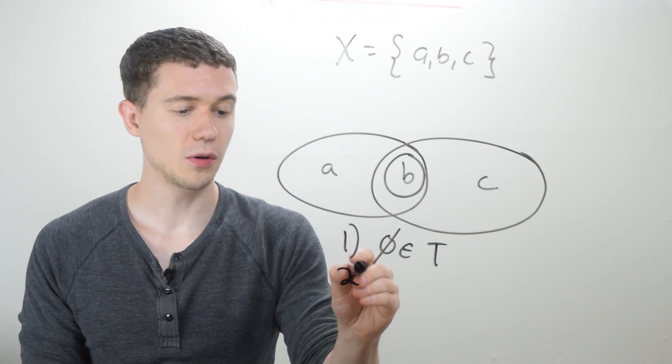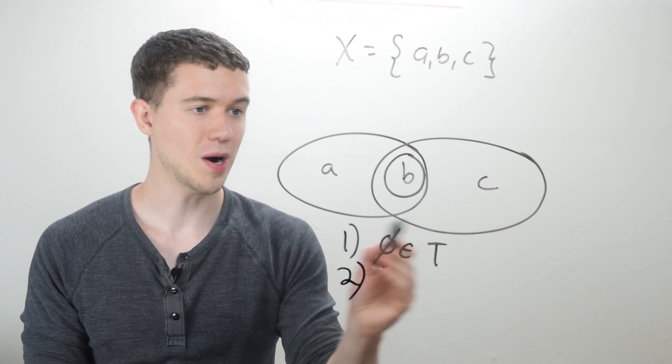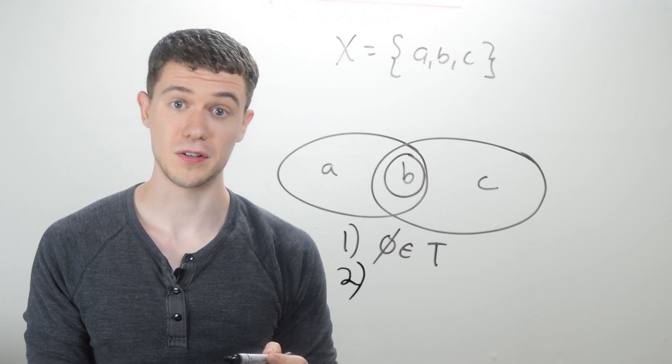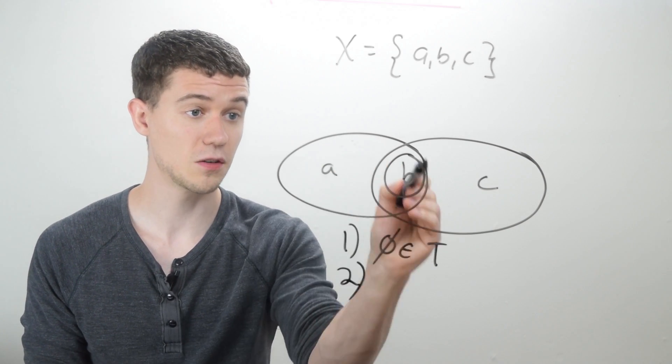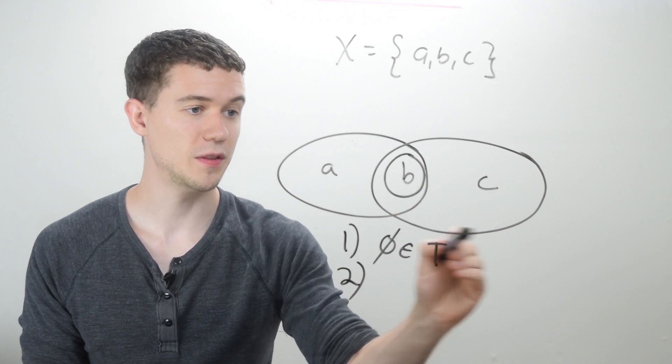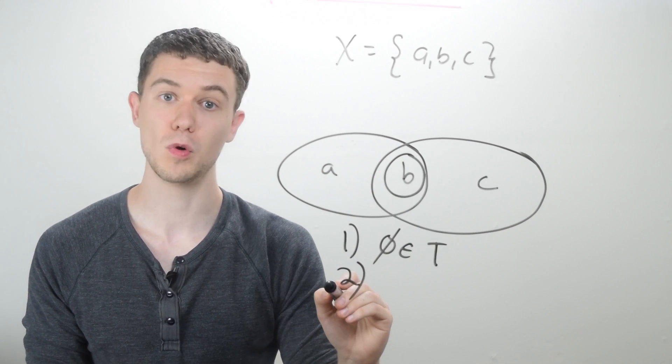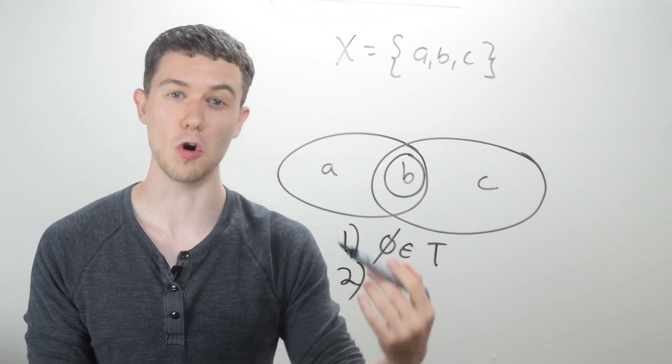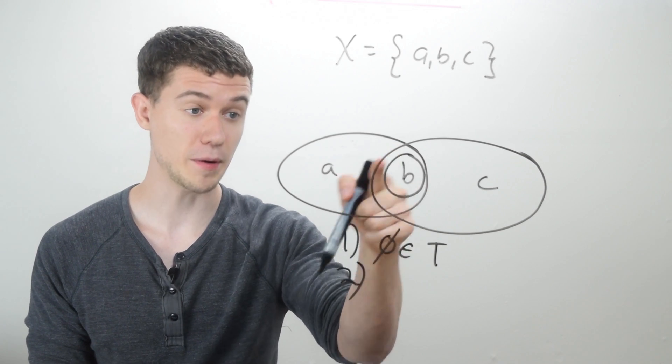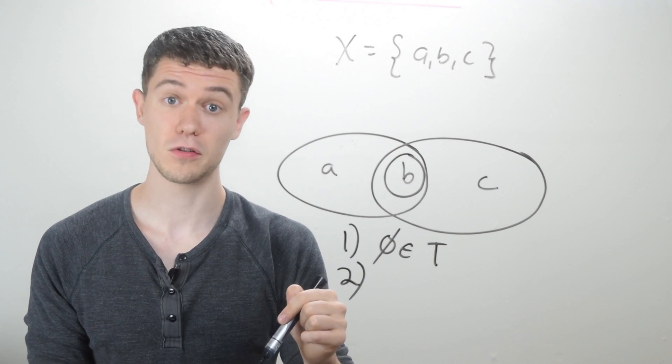Well, what about intersection? Do I have any of these circles intersecting? Well, I've got this big circle intersecting with this big circle. And where's their intersection? Where's their overlap? Well, they overlap at B.